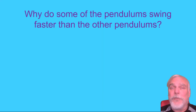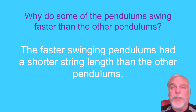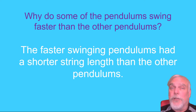Now let's think about the question I asked before the video started: why do some of the pendulums swing faster than others? The answer is that the faster-swinging pendulums had a shorter string length, and the slower-swinging pendulums had a longer string length. It had nothing to do with the weight of the mass.